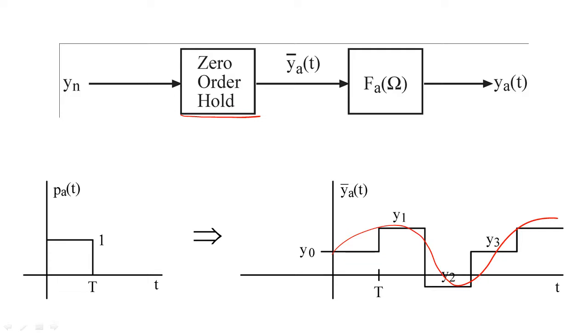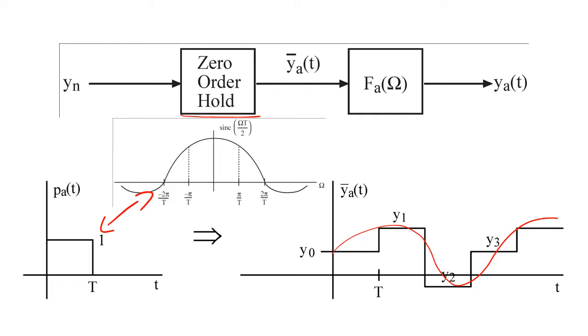Since p sub a is a rectangle in the time domain, p sub a of omega will be a sinc function in the frequency domain. Suppose that y sub a has a band-limited triangular frequency response. This means we will have repeating copies of the triangular frequency response at every interval of 2 pi.